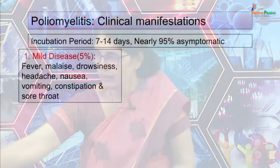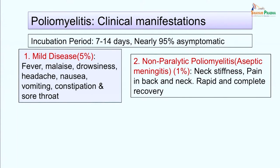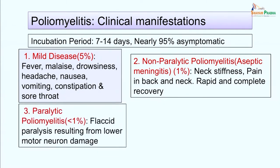Nearly 95 percent of cases remain asymptomatic. Five percent develop mild disease presenting with fever, malaise, drowsiness, headache, nausea, vomiting, constipation, and sore throat. In about 1 percent of cases there is involvement of the nervous system and development of non-paralytic poliomyelitis, clinically characterized by neck stiffness and pain in the back and neck, with complete and rapid recovery. In less than 1 percent of cases there is actual paralytic poliomyelitis, with involvement of the central nervous system and flaccid paralysis resulting from lower motor neuron damage.